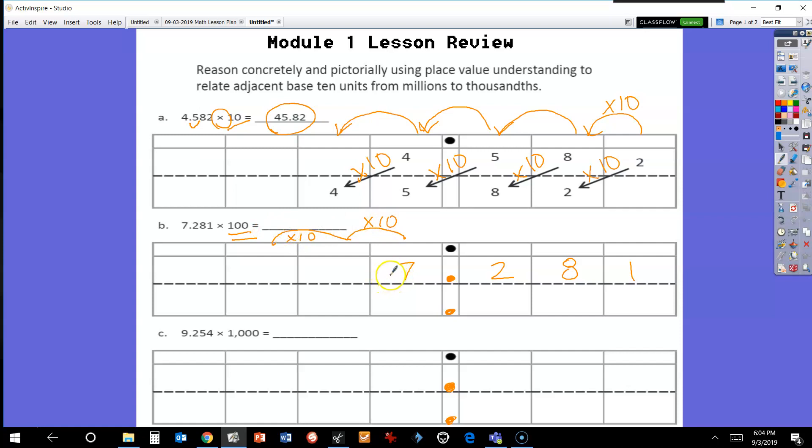I know my 7 is going to go from my ones place all the way to my hundreds place because it grew times 10 and then times 10 again, which is the same thing as times 100. The 2 is going to move from my tenths place to my tens place, 8 is going to move from my hundredths place to my ones place, and 1 is going to move from my thousandths to my tenths. Your final answer is 728.1.